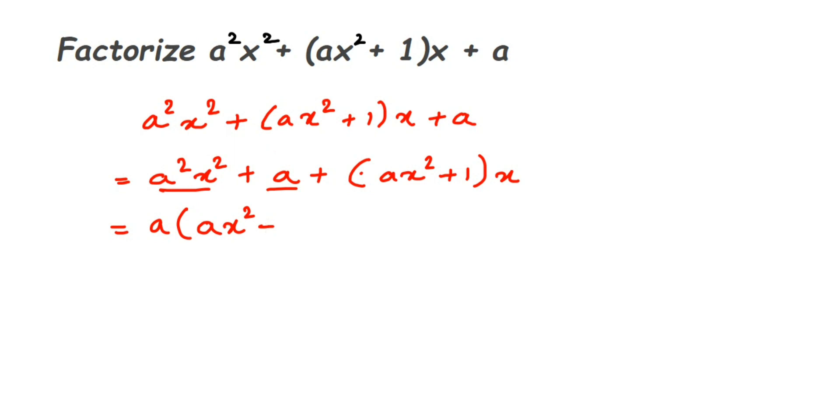Now again, if you observe, we have two terms. In both terms, we have (ax² + 1) which is present, and we can take it as a common factor.